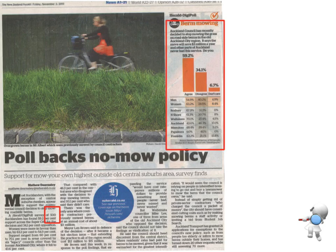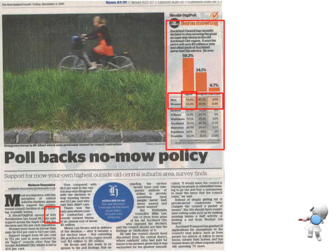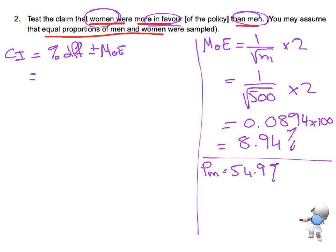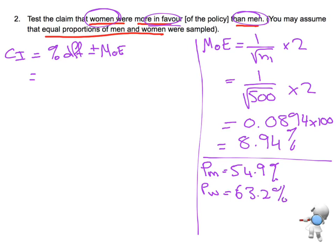Looking at this data at the top, we've got our men and our women, and we want to compare the men and women that are in favour, so we're looking at the agrees. Men agree is 54.9% and women agree is 63.2%. So the percentage of men is 54.9% and the percentage of women is 63.2%. I need to find the percentage difference, so I'm going to do women minus men: 63.2% minus 54.9%, which gives me 8.3%.